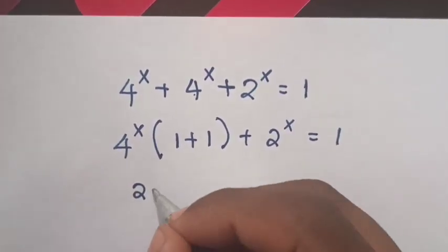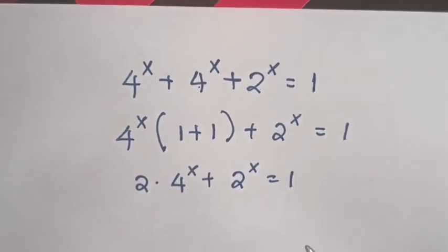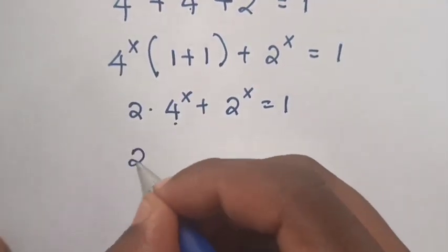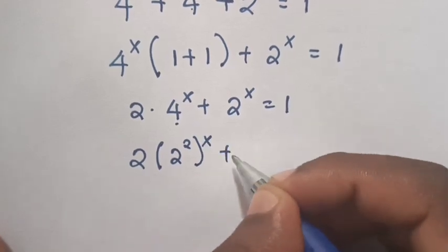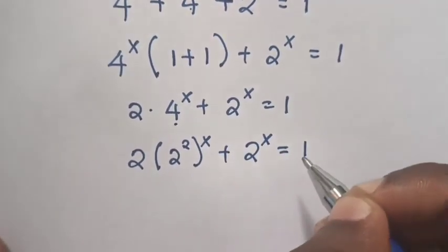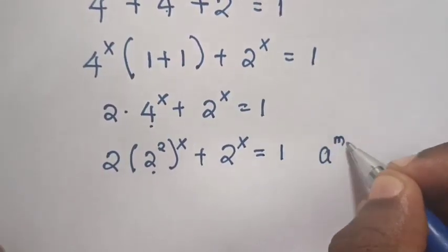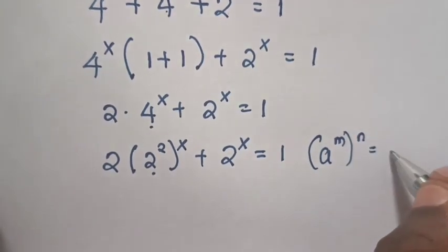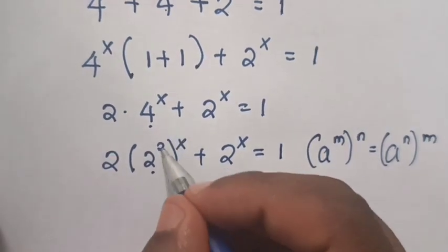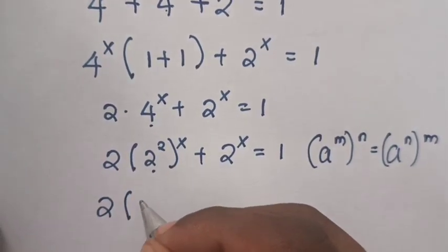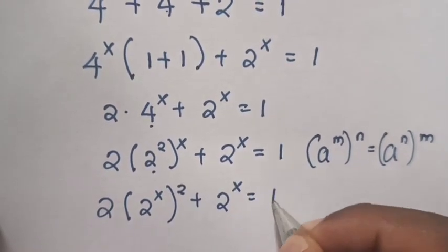So 2 times 4 power x plus 2 power x equals 1. Then 4 power x can be simplified as 2 power 2 bracket power x, plus 2 power x equals 1. From the exponential formula, a power m bracket power n equals a power n bracket power m, we exchange the powers, so it becomes 2 bracket 2 power x bracket power 2 plus 2 power x equals 1.